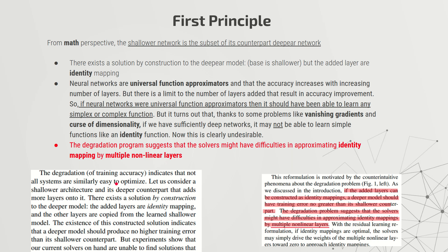Taking a step back to first principles and the mathematics behind neural networks, a neural network is just trying to learn a general mapping function from input to output. If we think about it, a deeper neural network is actually a superset — meaning the shallow network is a subset of the deeper neural network. The deeper network can learn more sophisticated representations and mapping functions, and the shallow network is just a subset of those solutions.